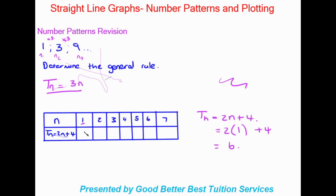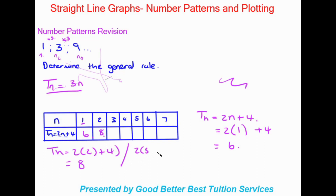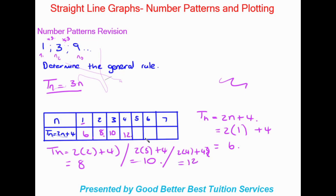So 2 times 1 gives us 2, plus 4 gives us 6 — that's our first TN value. For the second one we substitute N equals 2: TN equals 2 times 2 plus 4, which gives us 4 plus 4 equals 8. Carrying on, 2 times 3 plus 4 gives us 6 plus 4 equals 10. Then 2 times 4 plus 4 gives us a final answer of 12.